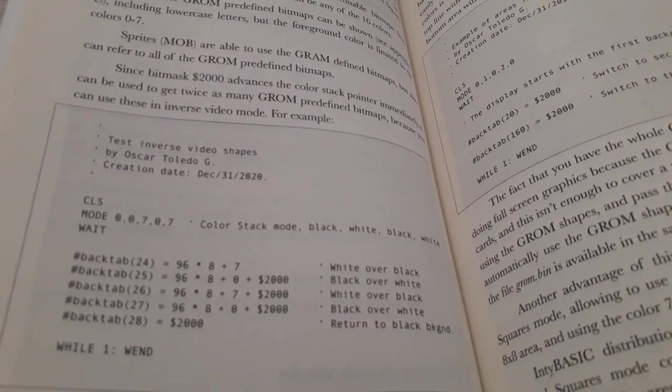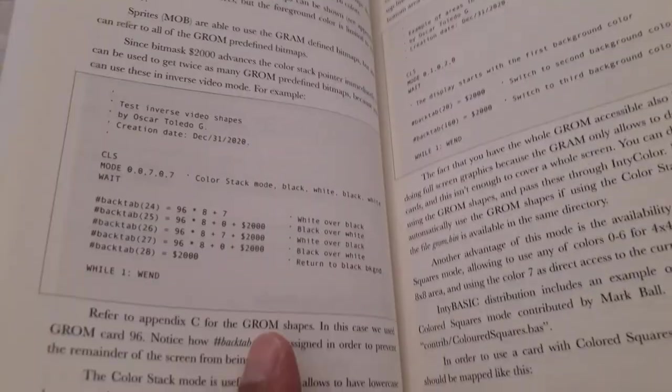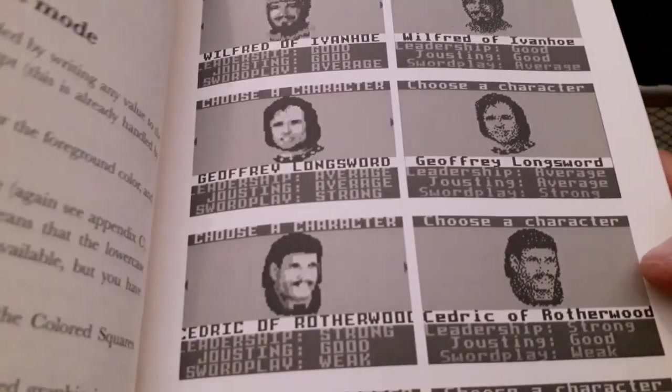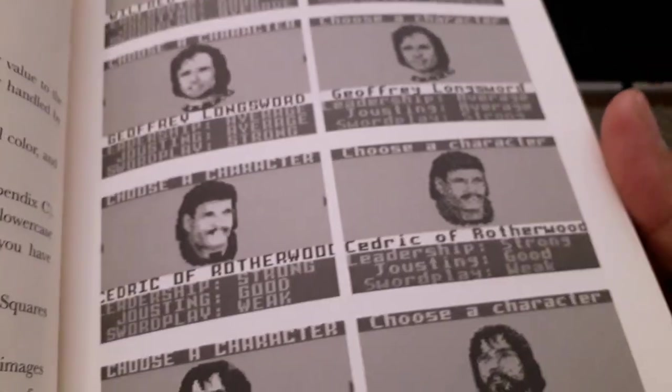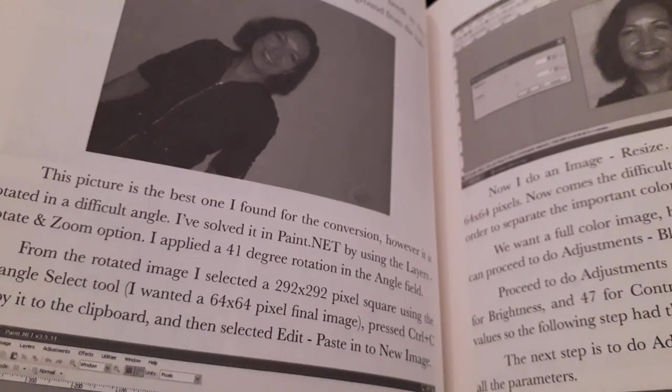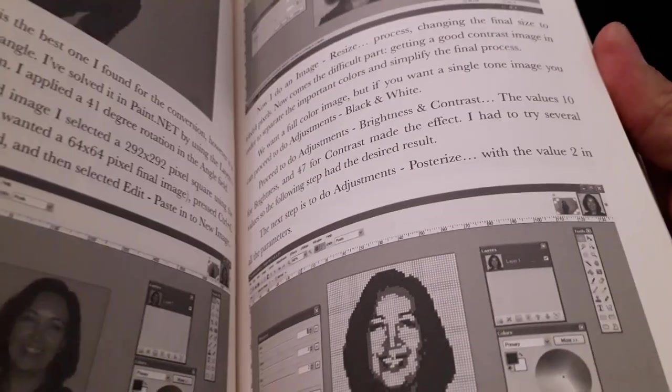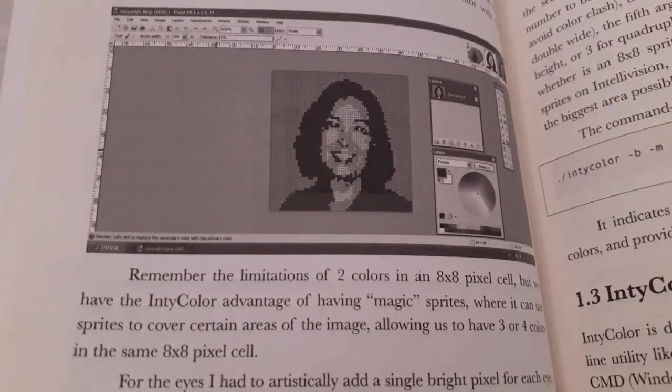Some of the things discussed in this book is advanced usage of the graphic modes, ways to have more graphic quality. This is from the game Defender of the Crawl by Electronel. Conversion of pictures to Intellivision graphics, as you can see it's pretty recognizable.